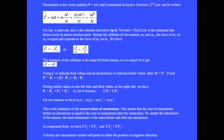Momentum is the vector quantity P equals mv. Newton's second law can be written F equals ma equals mass times delta-v over delta-t. Or if we put mass with the velocity, then it's delta(mv) over delta-t, which is delta-p over delta-t. For tiny delta intervals, this is the calculus derivative dp/dt.